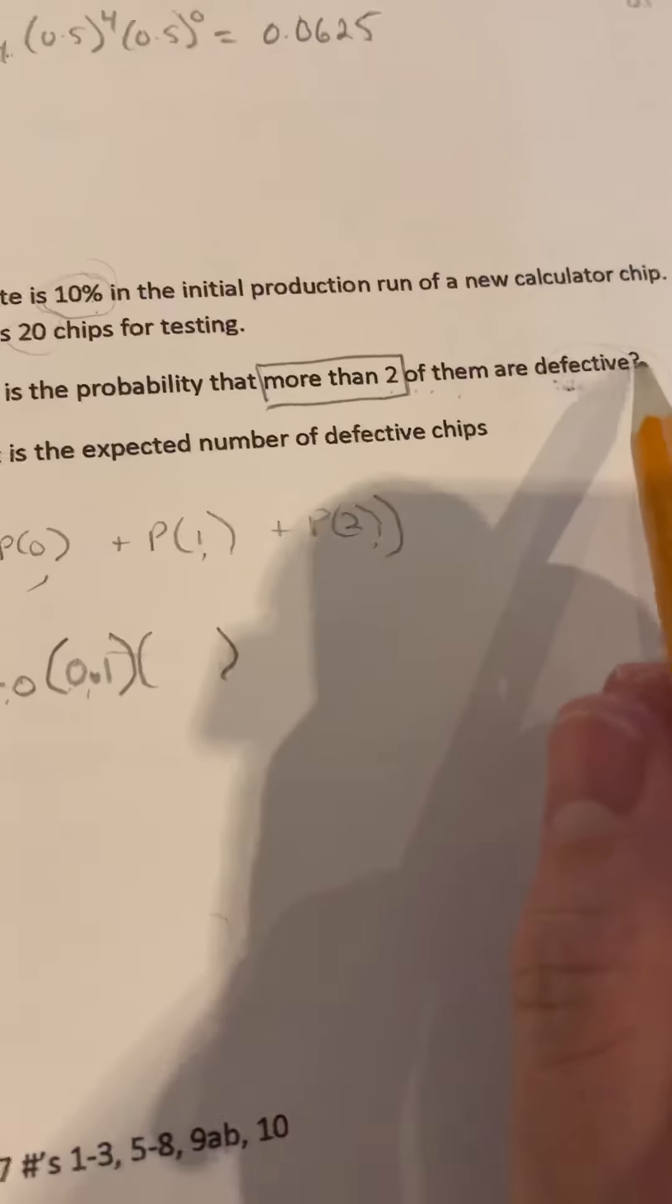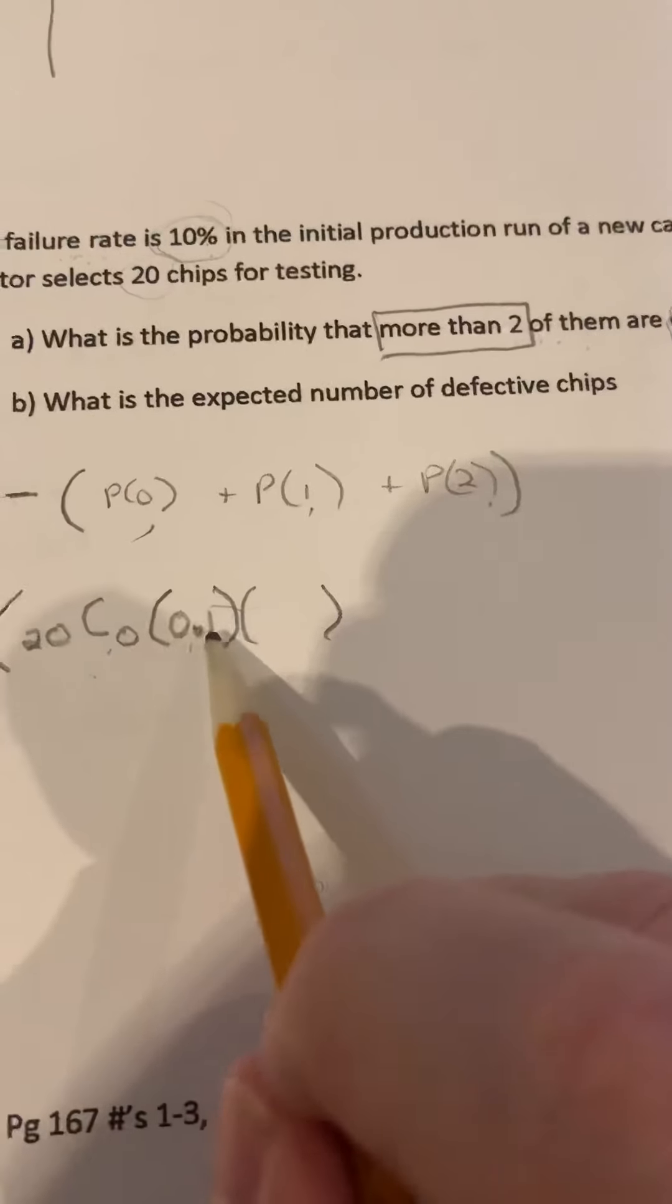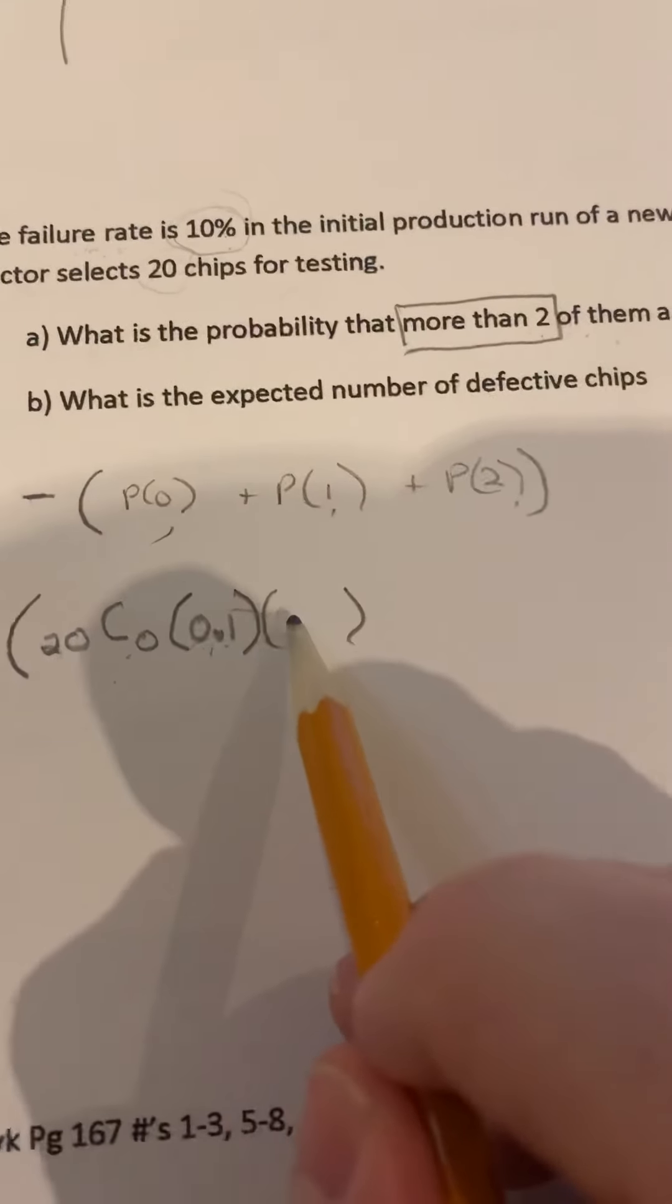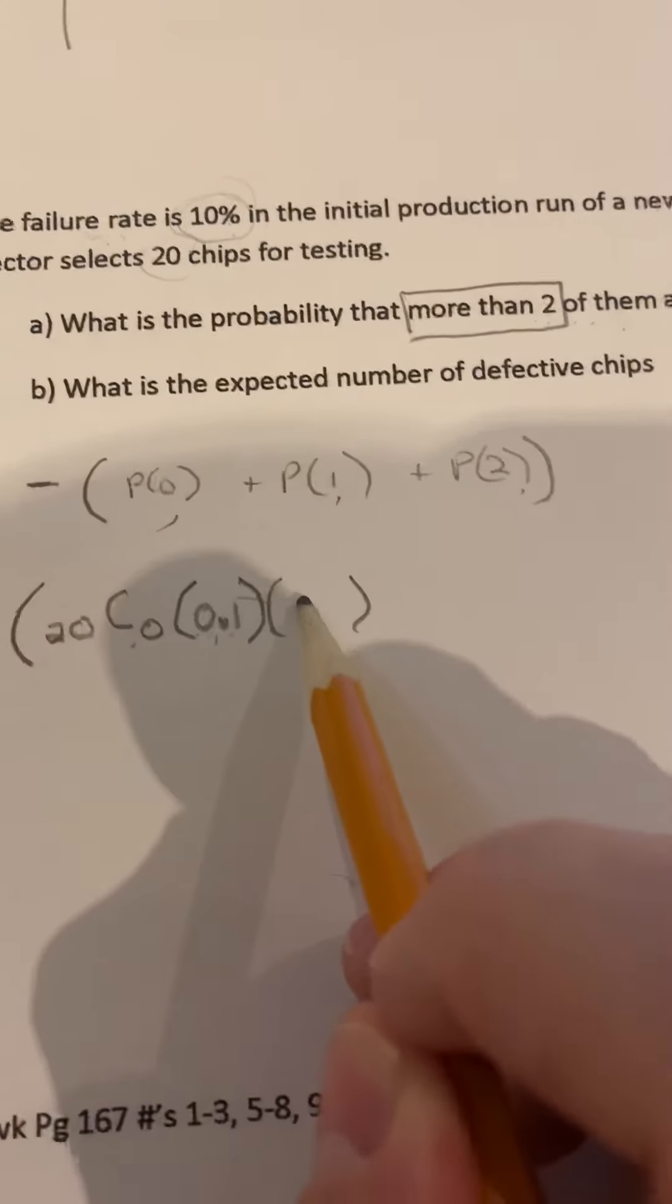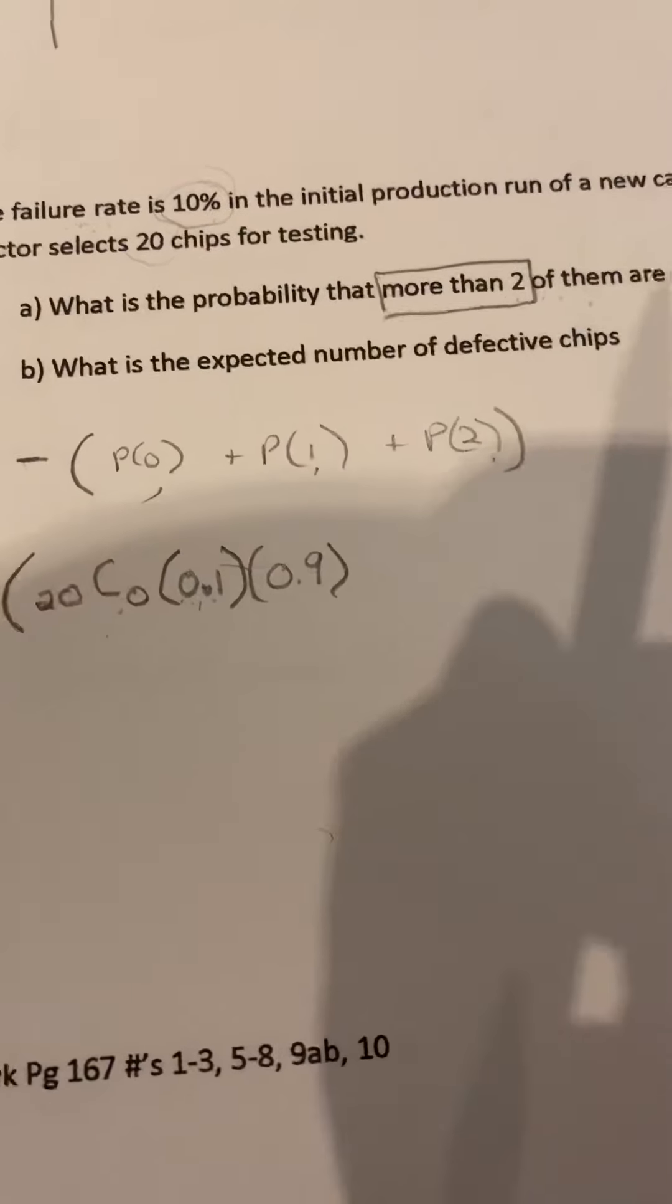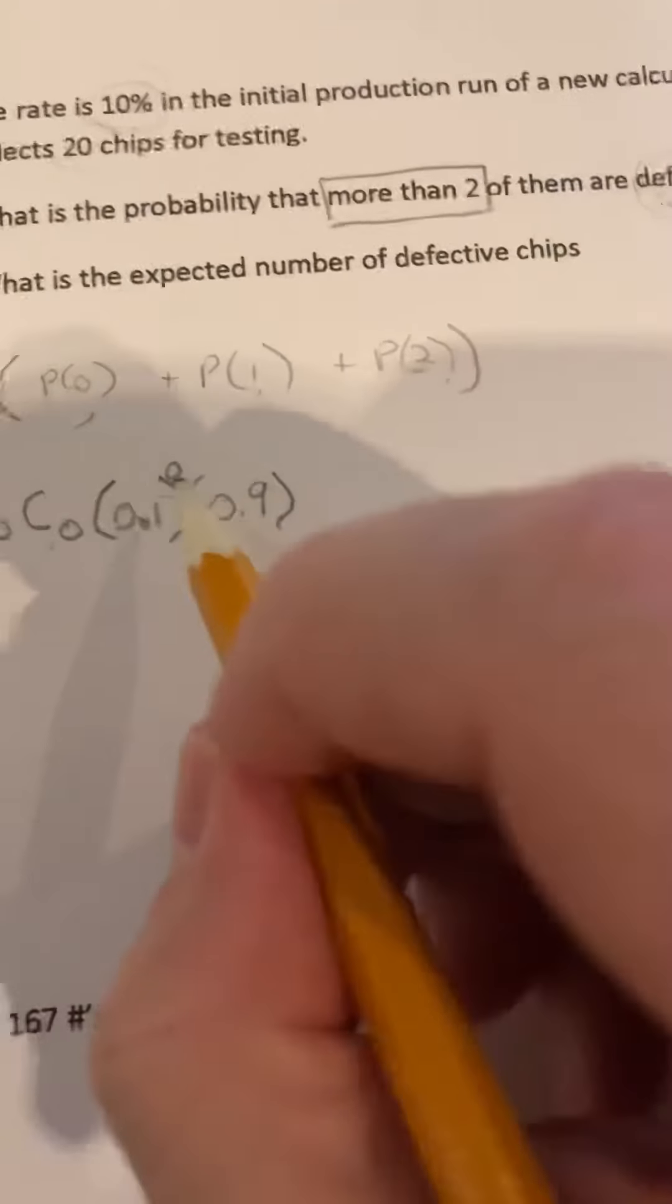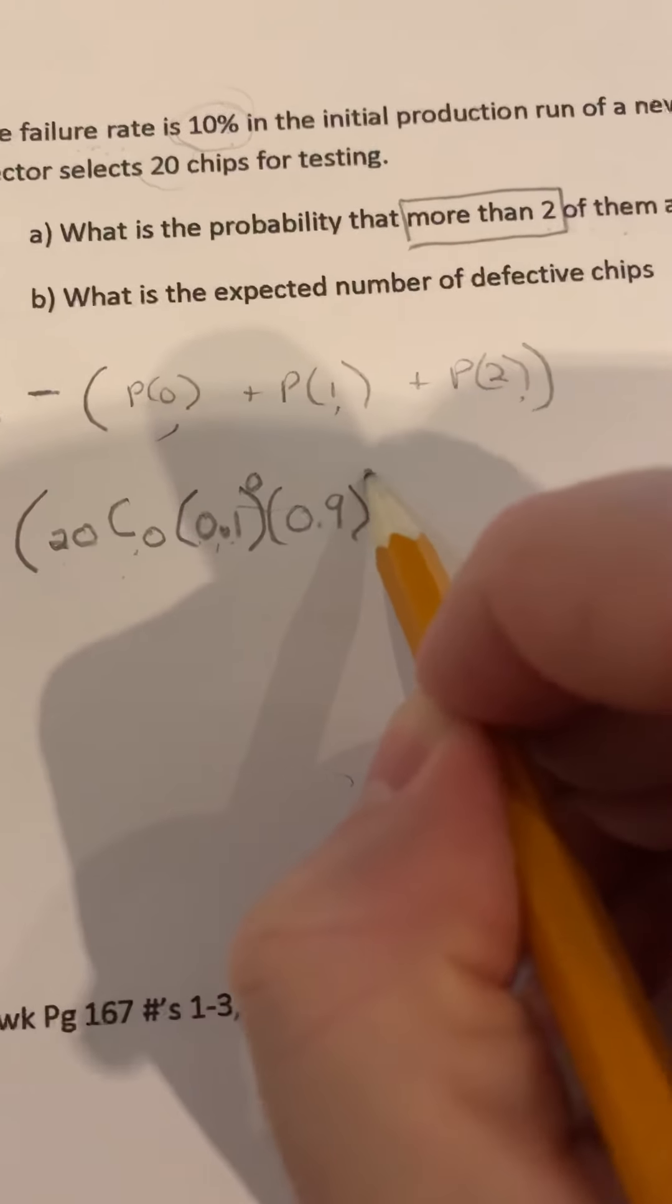Because we're looking at how many are defective, the chances that it's defective is 10%. So this is what we're looking at. So this becomes the success. The probability of a defect is 10%, which makes the probability of not defective be 0.9. So this would be 0. And then this would be 20 minus 0, which is 20.